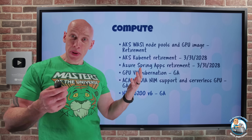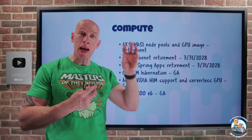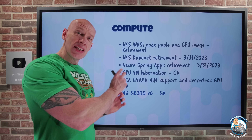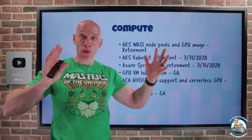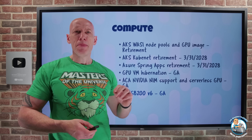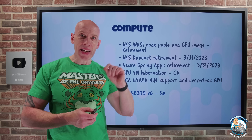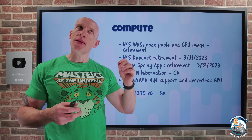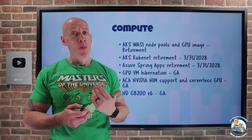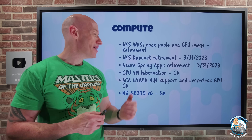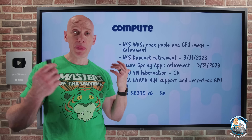A big GPU announcement is the ND-GB200 V6. These use the new NVIDIA GB200 NVL72 Grace CPUs and Blackwell GPUs — 36 Grace CPUs and 72 Blackwell GPUs in a single 72-GPU NVLink domain, so think a rack-scale system that acts like one massive exascale GPU. It also uses the new high-bandwidth NVIDIA NVLink C2C interconnect between the CPU and GPU. It's designed to deliver next-generation AI and frontier models — ideal for large-scale inferencing and training.